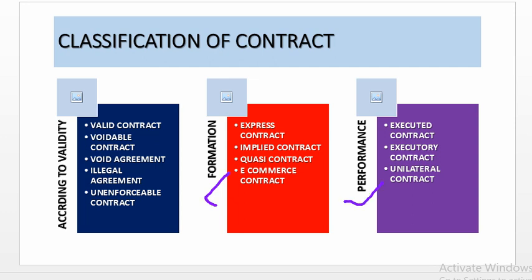According to validity: valid contract, voidable contract, void agreement, illegal agreement, and unenforceable contract.